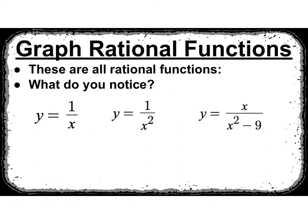We've already looked at 1 over x and 1 over x squared. Hopefully you notice that this one is different because it has an x in the numerator. The first ones are reciprocal functions. Altogether, they are rational functions. And when we get to rational functions with an x in the numerator, it has a lot more properties that we need to learn about.